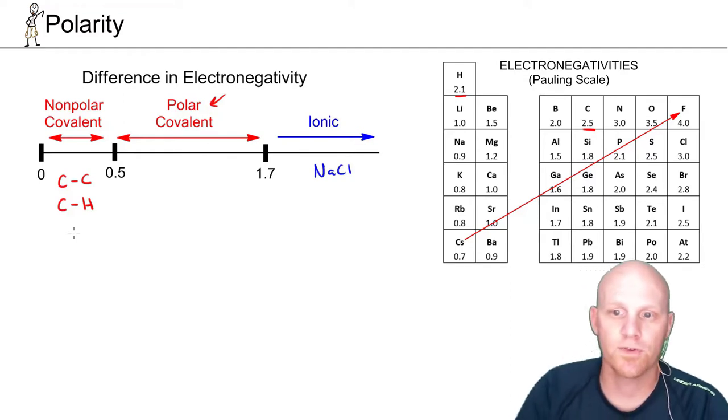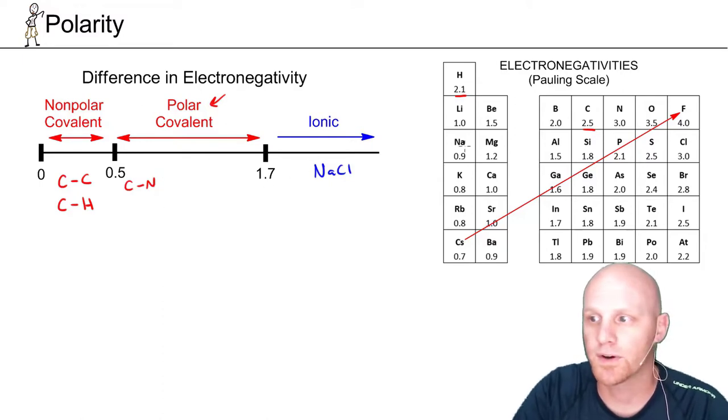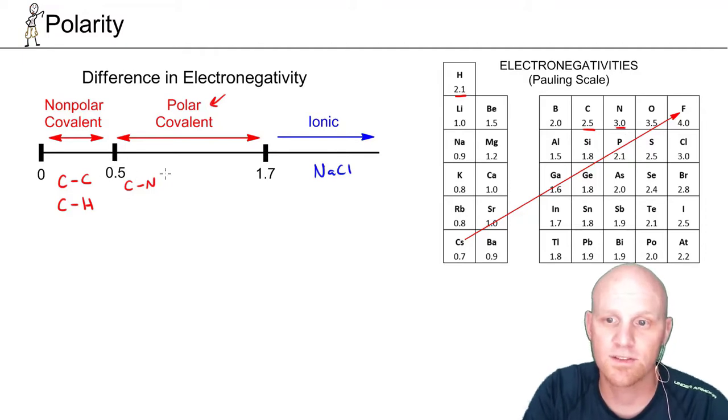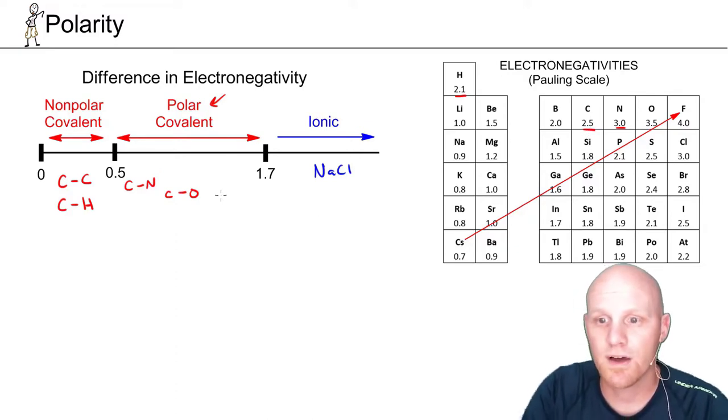From there, we can go to polar covalent, and you might look at, say, like a carbon-nitrogen bond, and you see this is right at the cusp of being polar. So carbon's 2.5, nitrogen's 3.0. That's a difference of 0.5, and we consider that polar right at the border. So a little more polar than that is the carbon-oxygen single bond. In carbon-oxygen here, 2.5 versus 3.5, a difference of 1.0.